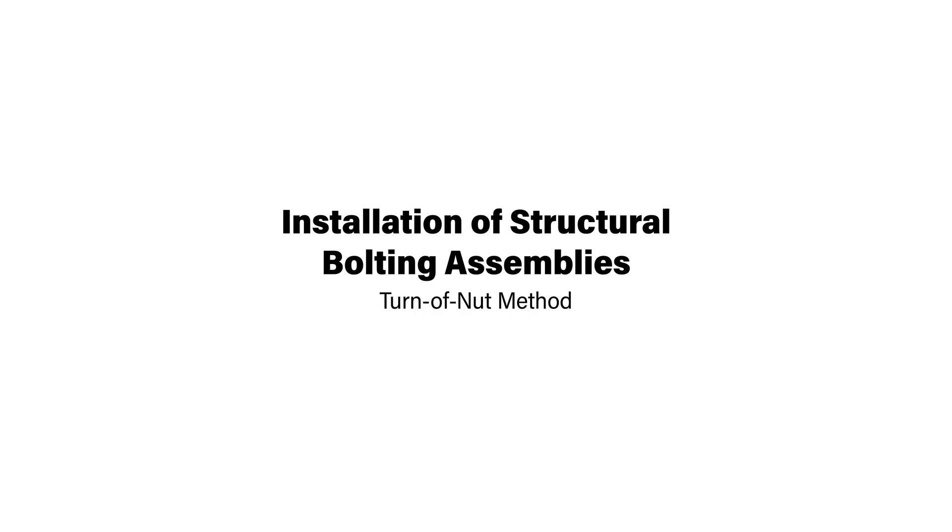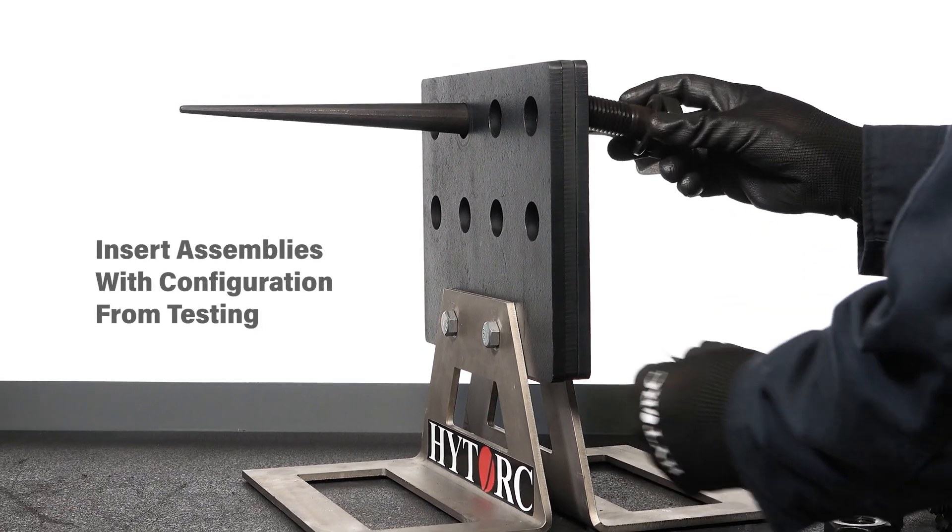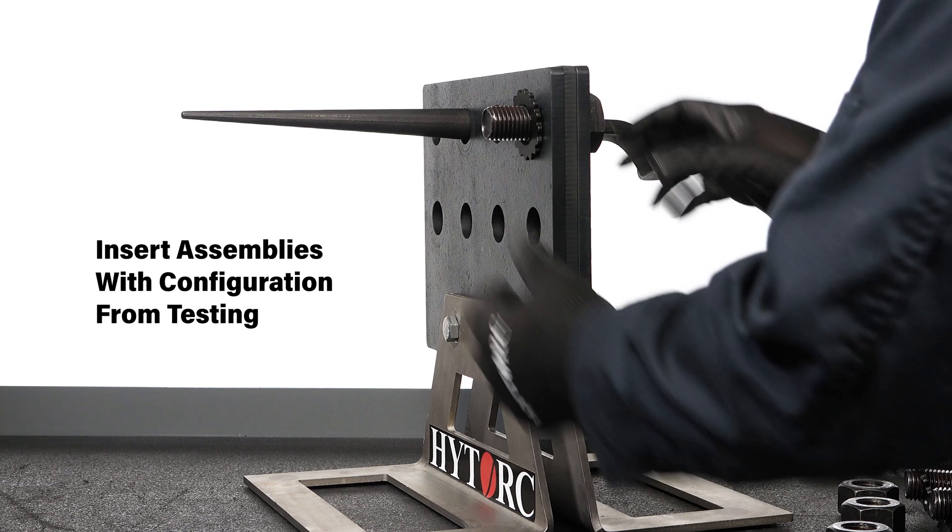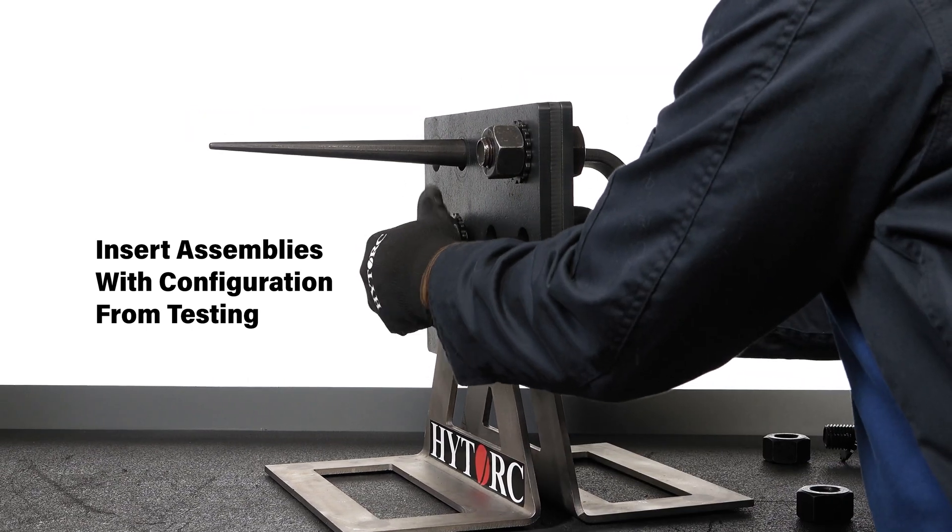The first step in installation of structural bolting assemblies following the turn of nut method is to insert the assemblies into the connection with the components configured the same way they were configured during PIV testing.